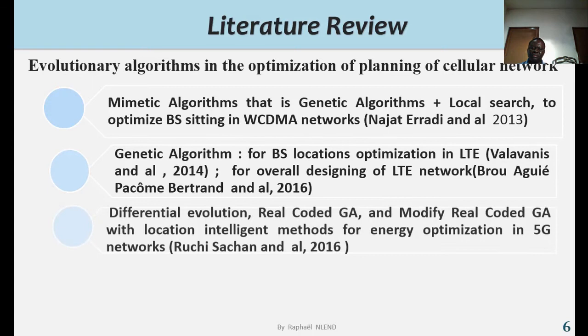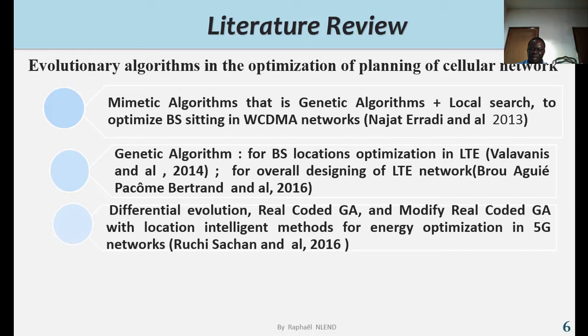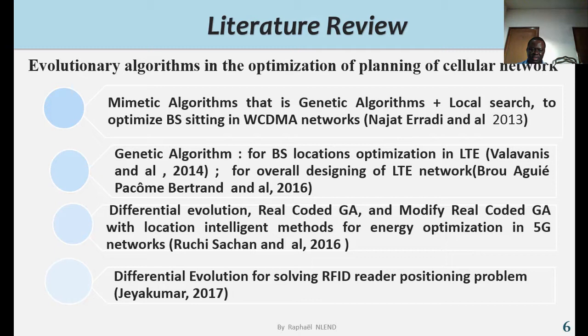Rishi Sachan and Al in 2016 worked on differential evolution, real-coded genetic algorithm and modified real-coded genetic algorithm with location intelligent method for energy optimization in 5G, and Jayakuma in 2017 worked on differential evolution for solving RFID reader positioning problem.